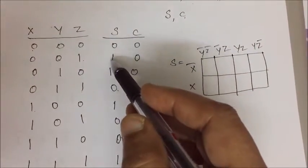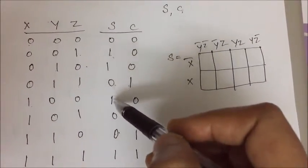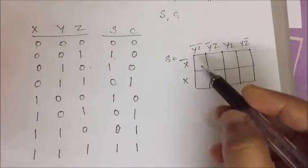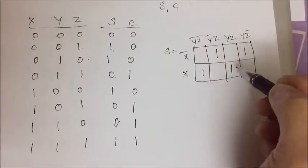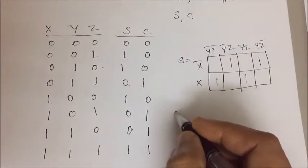Now here S is 1 in the case of 1, 2, 4 and 7. This is 1, 2, 4 and 7. No simplification is possible.